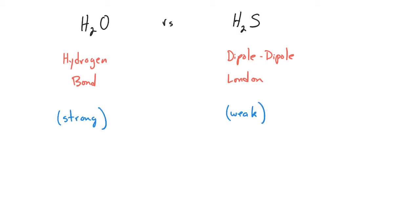Based on the strengths of the intermolecular forces, we would expect water to have the higher boiling point. Water boils at about 100 degrees Celsius, while hydrogen sulfide has the lower boiling point at about negative 60 degrees Celsius.